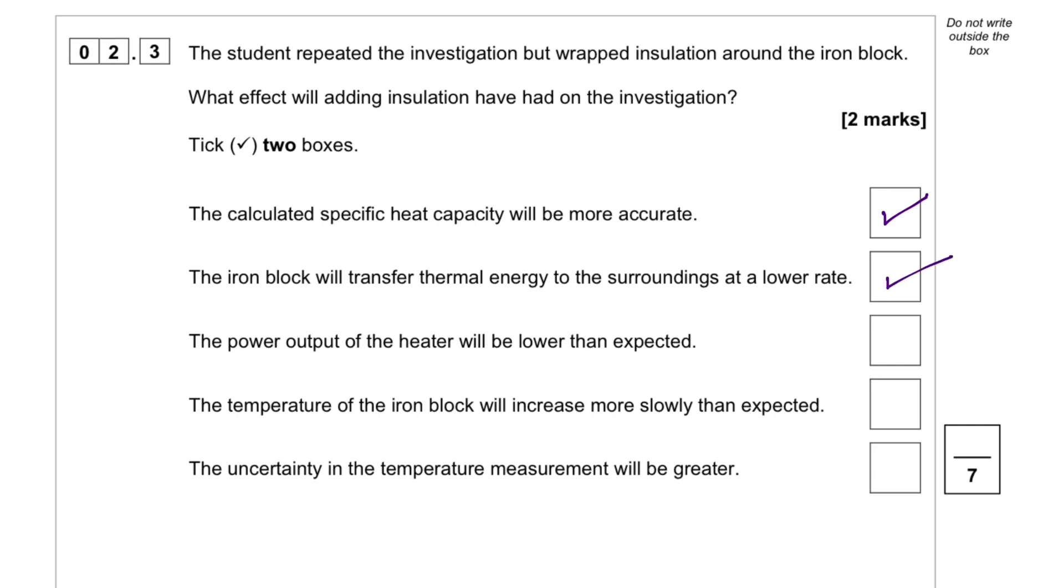And the next one, let's see, we've already got the two. The power output of the heater will be lower than expected. No. The temperature of the iron block will increase more slowly than expected. No. The uncertainty of the temperature measurement will be greater. No. So it's the first two.